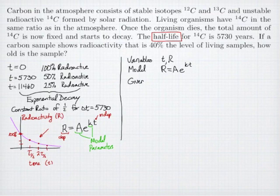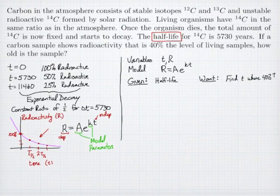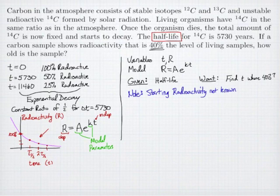We can now look at the information we're given and the information we need. We're given information about the half-life, and we want at what time am I at 40%? Because if I can find the time when I'm at 40%, I've identified the age of my sample. Here's an interesting observation to start. We actually don't know how much carbon we started with.